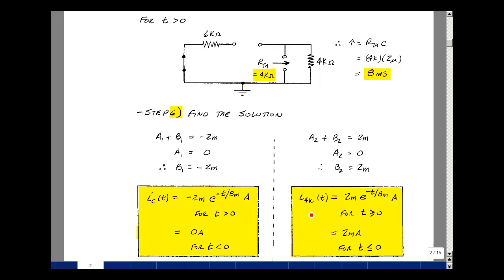The second variable was the current of the 4k resistor. Again, that's going to be equal to a2 plus b2, e to the minus t over tau. Now we found that a2 plus b2 was 2 milliamps, a2 was 0, so b2 is 2 milliamps. So our current in our 4k resistor then is just 2 milli e to the minus t over tau, which is 8 milliseconds. And again, the units on this would be amps.